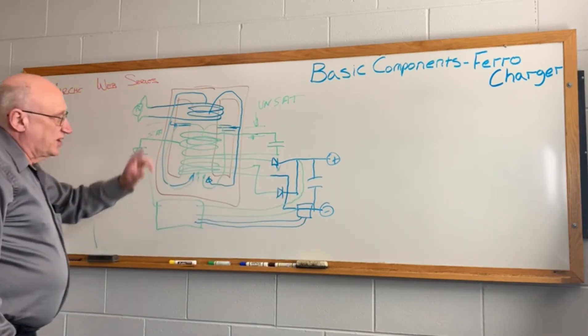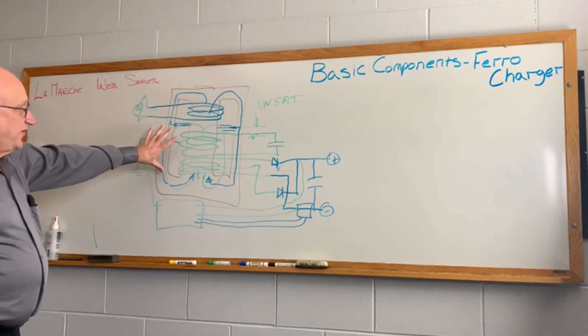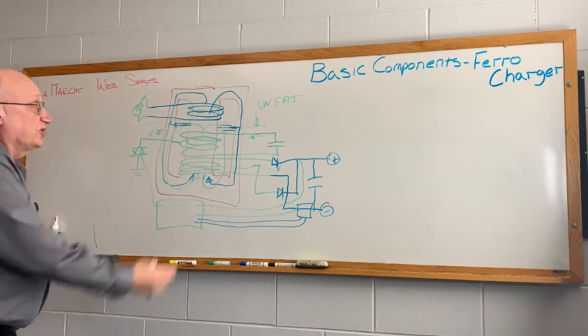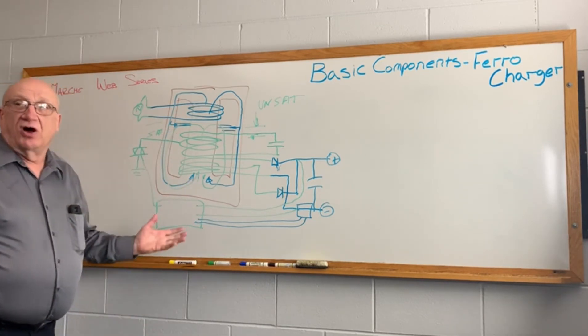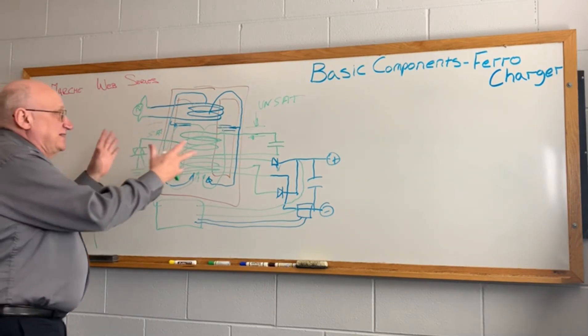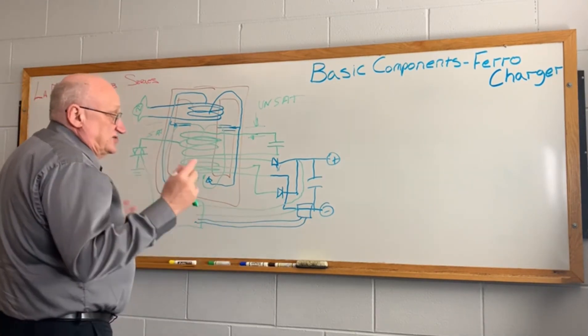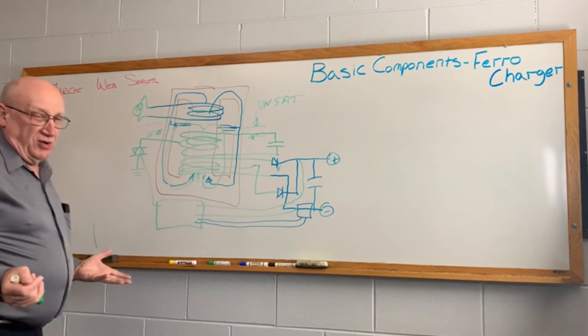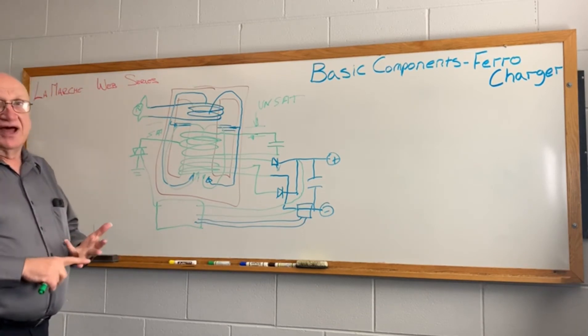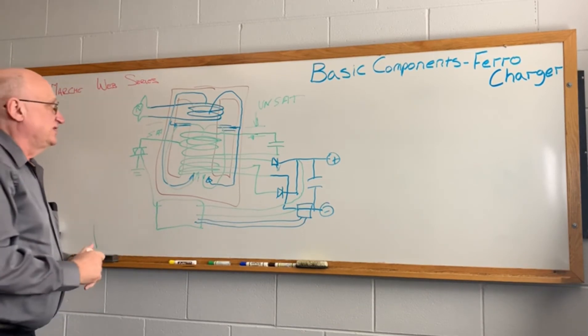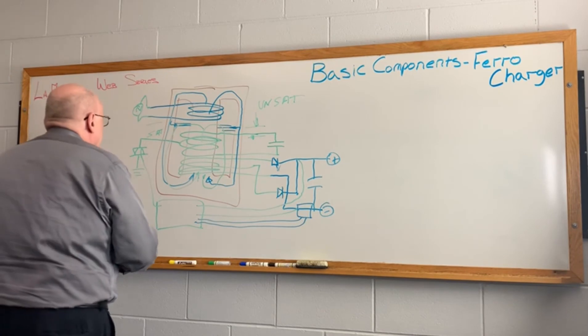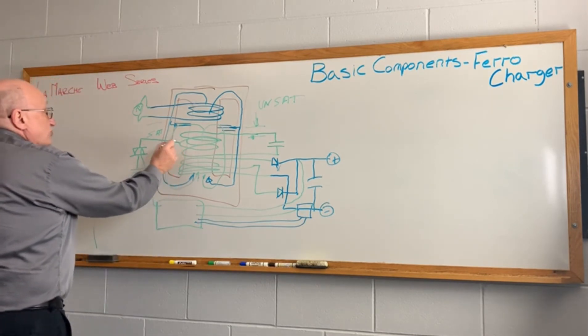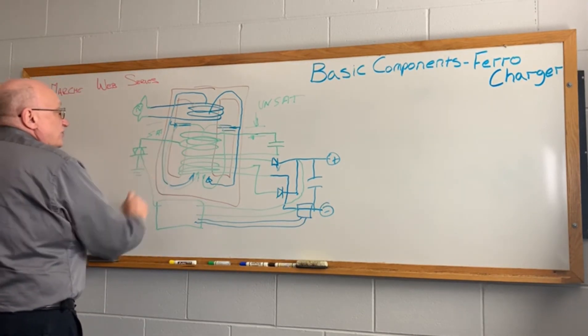The difficulty with the ferro uncontrolled is there's no adjustment. It's all run and stated by what you got for the steel. So you need some control and adjustment for float and equalize, for current limit, etc. So how do you do that? By adding a triac on the resonant winding.